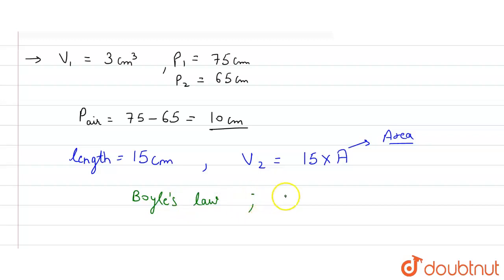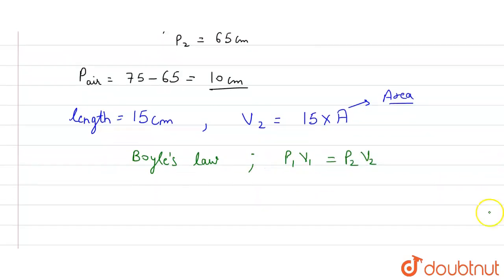...we can say that P₁V₁ is equal to P₂V₂. So what is P₁? P₁ is equal to 75, and V₁ at that case is 3. Now P₂ is equal to 10, and the volume is 15 into A.